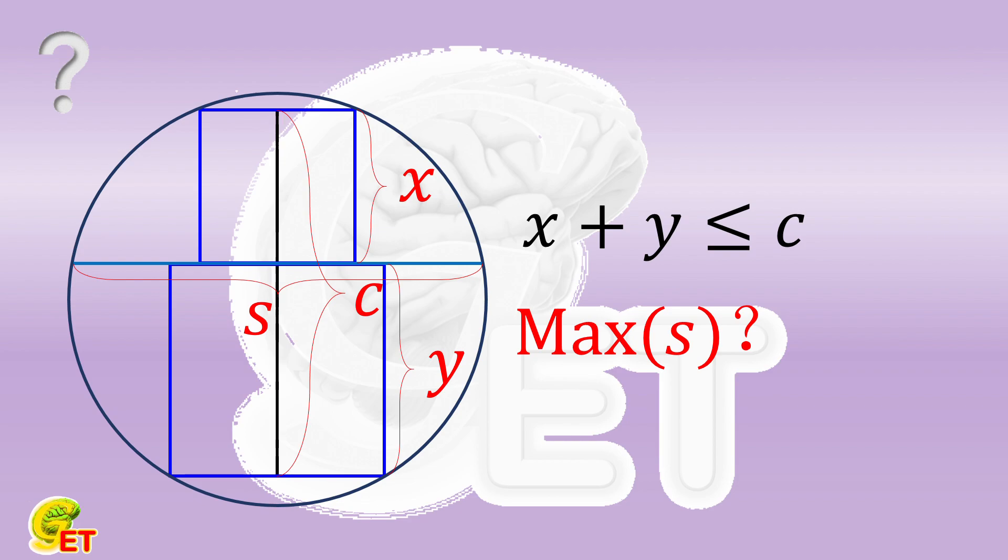First, we need to be clear that this question must be discussed in two cases separately. The first one is the case where the circumscribed circle has common points with both squares, as shown in this figure.